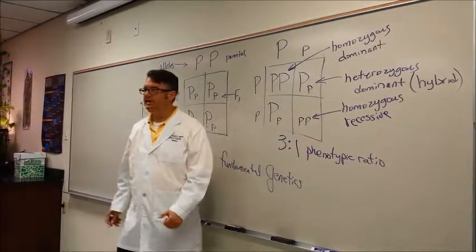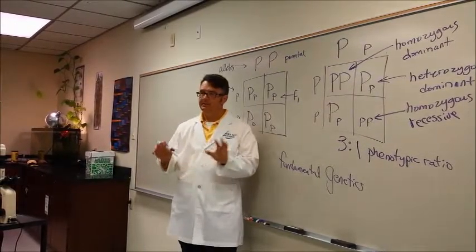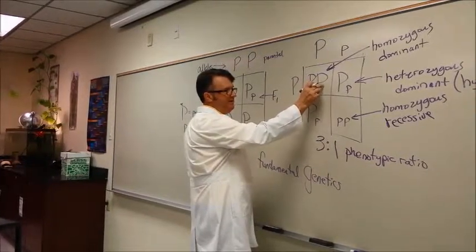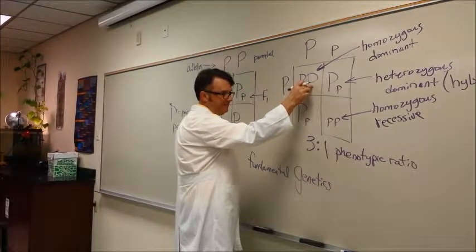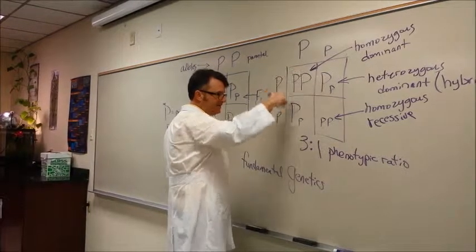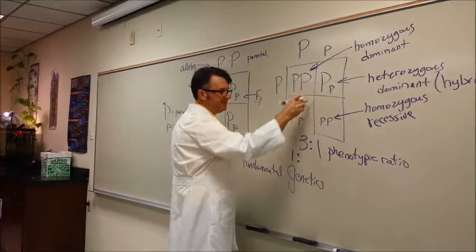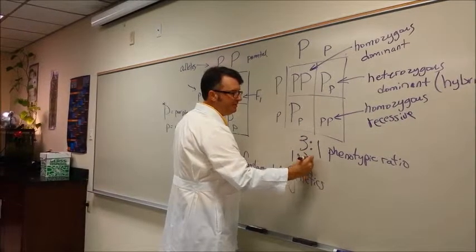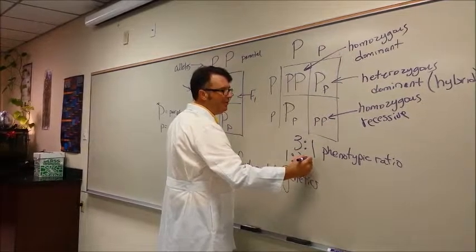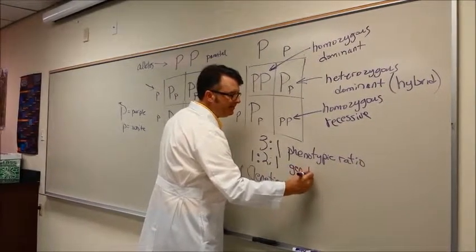Now watch this for just a second. How many of these big P big P's do we have? One. How many of these heterozygotes do we have? Two. And then how many of this homozygous recessive? One. This is called the genotypic ratio.